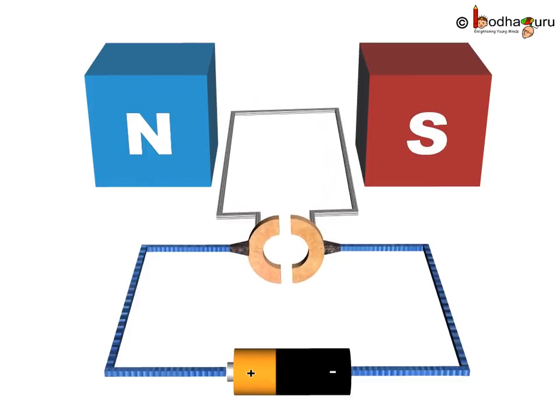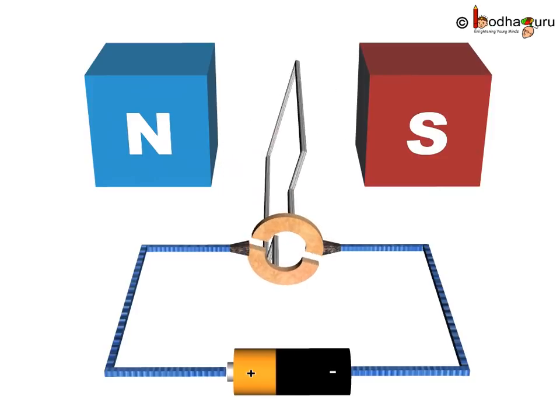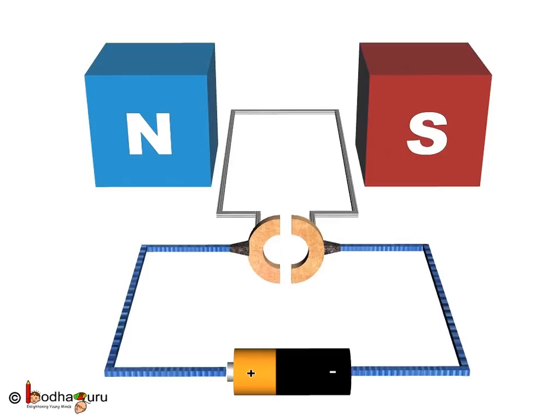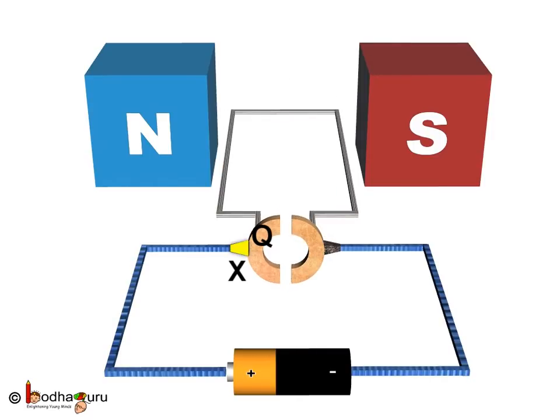Now, let us see what happens to ensure full rotation. Now, after completing half rotation, at half rotation, the half ring Q makes contact with the brush X while the half ring P makes contact with the brush Y. That is, we can say the contacts between the two split rings P and Q and the two brushes X and Y have interchanged.